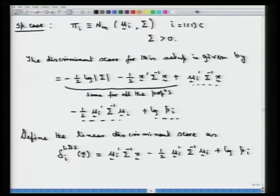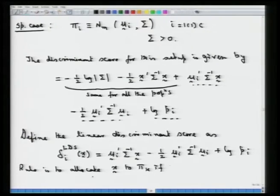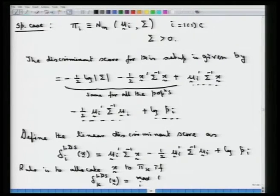The discriminant score reduces to a linear discriminant score (LDS), since the quadratic term is independent of the i-th population. We define the linear discriminant score for the i-th population as: δᵢᴸᴰˢ(x) = μᵢᵀΣ⁻¹x − (1/2)μᵢᵀΣ⁻¹μᵢ + log(pᵢ).